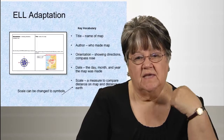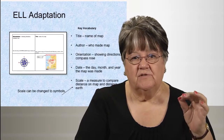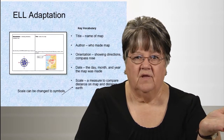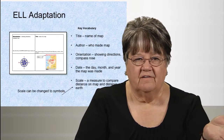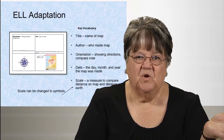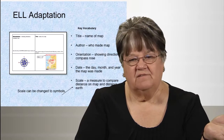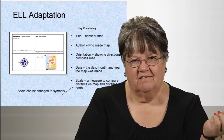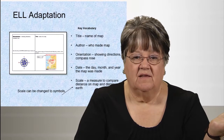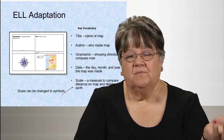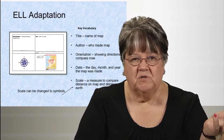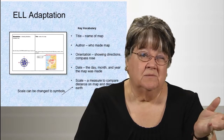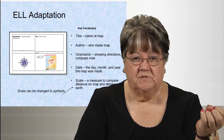The key vocabulary for TOADS is: T — title, the name of the map; A — author, who made the map; O — orientation, the compass rose; D — date, when the map was made; and S — scale or symbol, depending on which you want to start with. Starting with symbol is suggested, but scale works too.